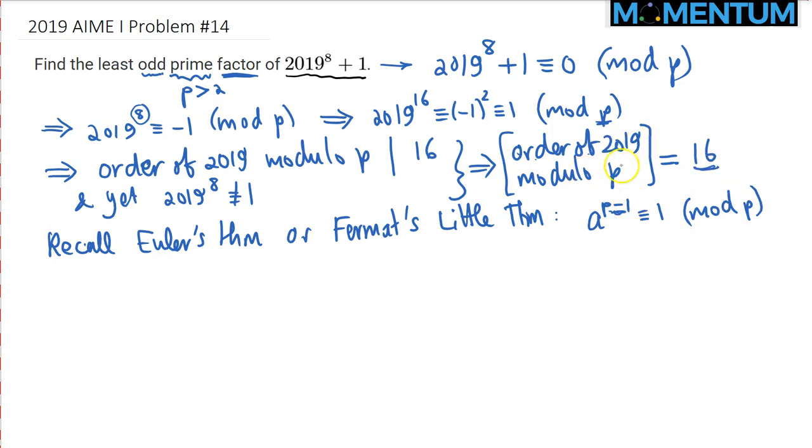So what it means is that P minus 1 should be divisible by 16. Because the order of a number is just the smallest exponent that will make it congruent to 1. If raising it to the P minus 1 power also makes it congruent to 1, it must be that P minus 1 is divisible by 16. Therefore, this implies 16 divides P minus 1, or in the language of modular arithmetic, P is congruent to 1 modulo 16.